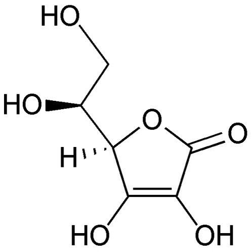Substances that have the ability to oxidize other substances — causing them to lose electrons — are said to be oxidative or oxidizing and are known as oxidizing agents, oxidants, or oxidizers. That is, the oxidant removes electrons from another substance, and is thus itself reduced. And, because it accepts electrons, the oxidizing agent is also called an electron acceptor.